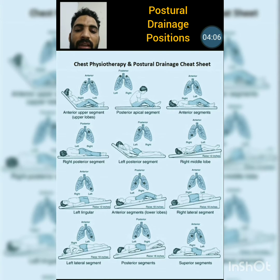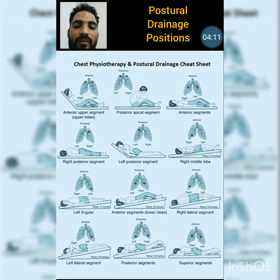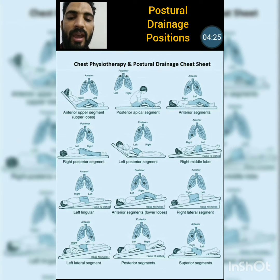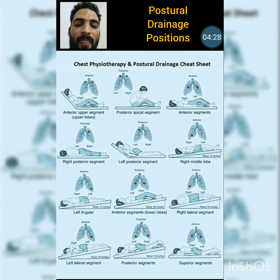The next position is the anterior segment position used for the lower lobes. The patient is lying supine with a pillow underneath both knees. The therapist taps on the middle of the thorax with both hands, providing percussion, and guides the patient through active exercises.